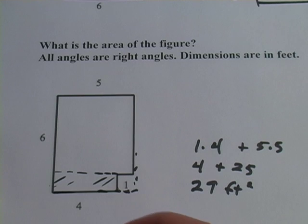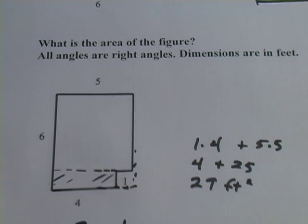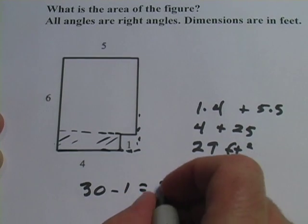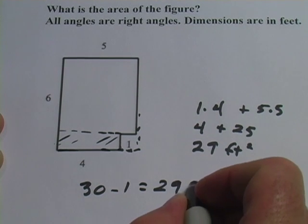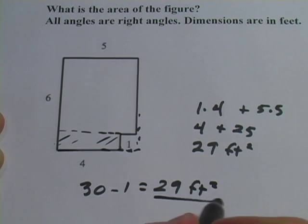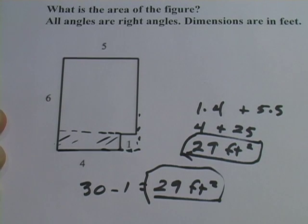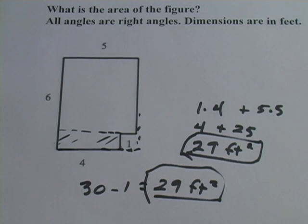So I would minus one times one, or one. So I would get thirty minus one is twenty-nine square feet. And get the same answer both ways. That is how to figure out the area of a complex shape.